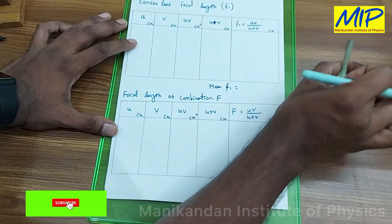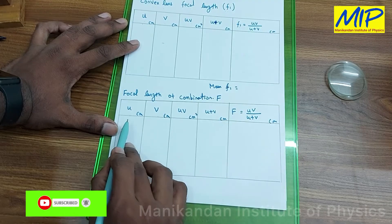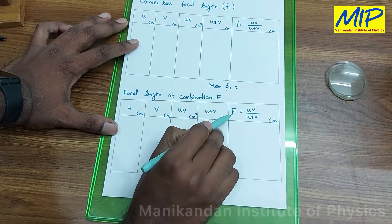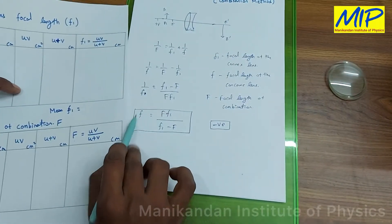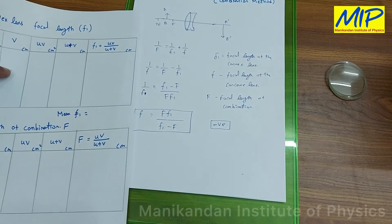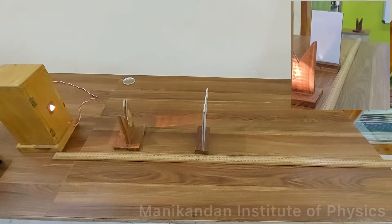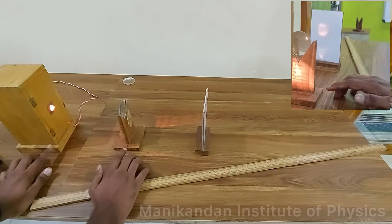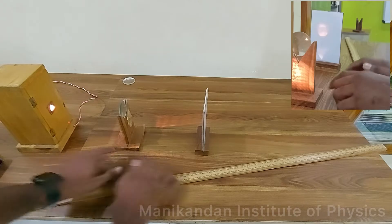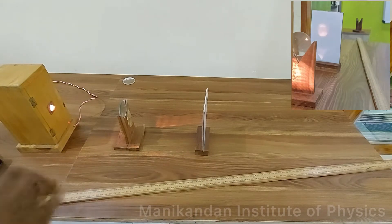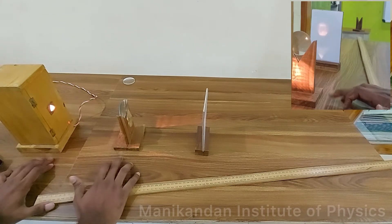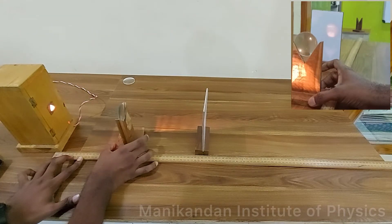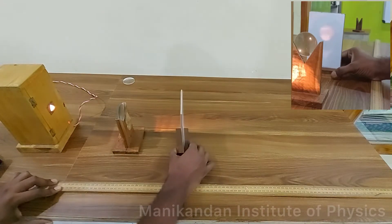After finding F1, we combine both lenses and place them on the lens stand. We find the image distance for the given object distance, and using that u and v value we find the focal length of the combined system. Using F1 and capital F, we find the focal length of the given concave lens. First, the distance between the light source and the lens stand is u; the distance between the lens and the screen is v. I am going to fix the object distance u between f and 2f, starting around 20 cm.